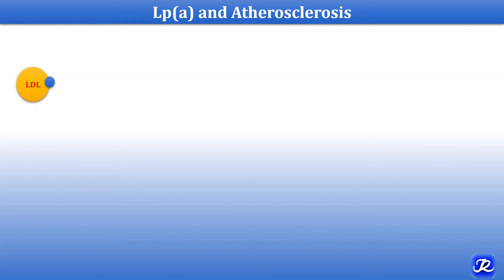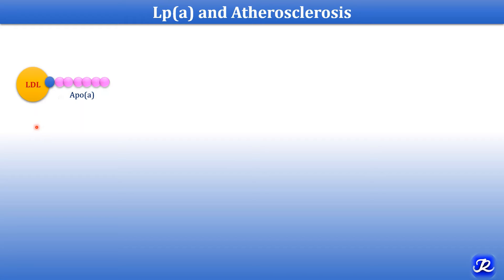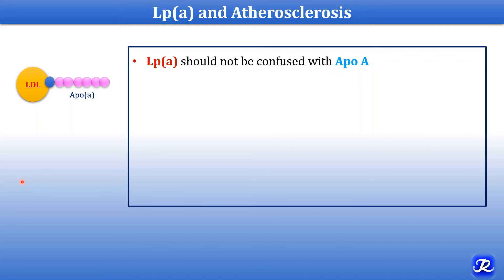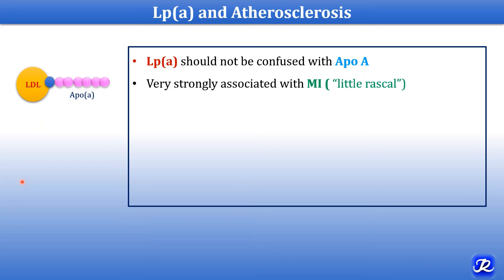What is lipoprotein(a)? It is similar to the LDL particle, which has an ApoB100 molecule attached. In lipoprotein(a), an additional Apo(a) molecule is attached to ApoB100 by a disulfide linkage, forming lipoprotein(a). This molecule is different from ApoA and is very strongly associated with myocardial infarction, which is why it is referred to as the 'little rascal.'